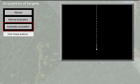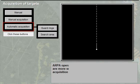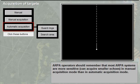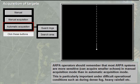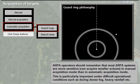Before an ARPA can be operated in automatic acquisition mode, the search criteria must be specified. Today's ARPA uses a guard ring for the search area. Most ARPA systems acquire fewer echoes in manual acquisition mode than in automatic mode, which can be a difficult operation during dense fog.